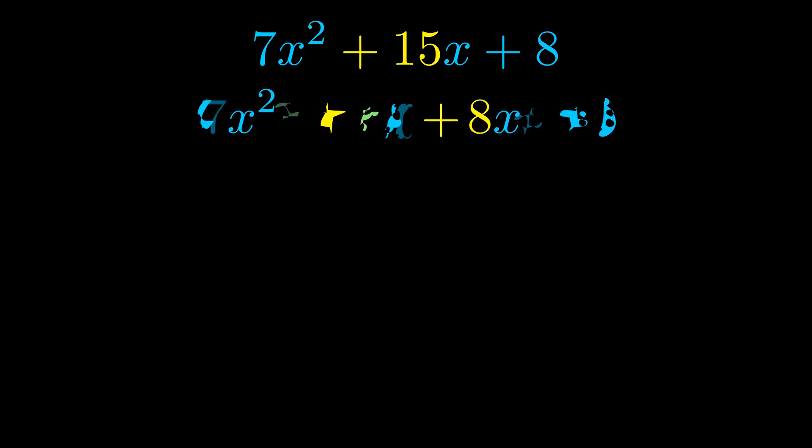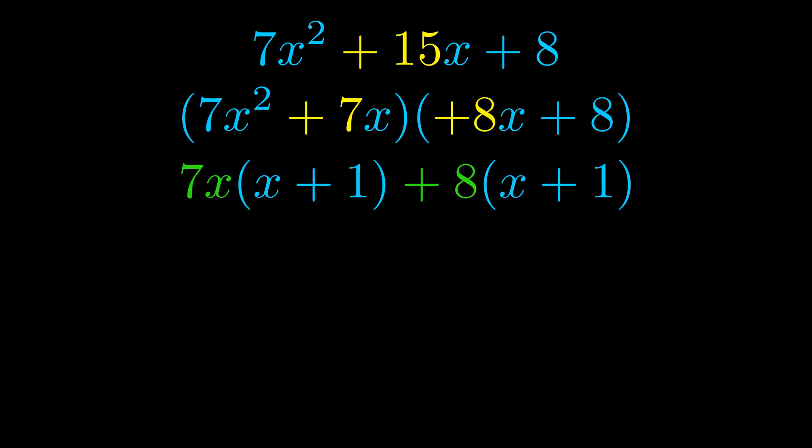Once we've done this we go ahead and we put parentheses around the first term and the last term. And we do that so that we can take the greatest common factor out of both terms. We can see the greatest common factor is now outside in green.